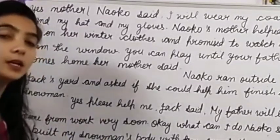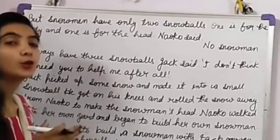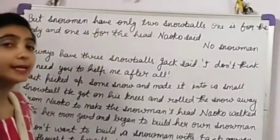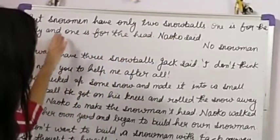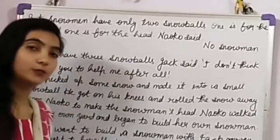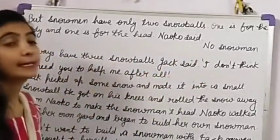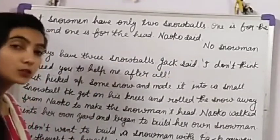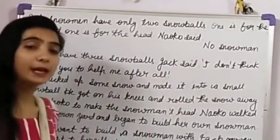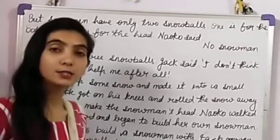Naoko said, 'But snowmen only have two balls — one for the body and one for the head.' Jack said, 'No, snowmen always have three snowballs.' Then Jack said, 'I don't think I need you to help me after all.' So they both had a quarrel about how many snowballs a snowman has.